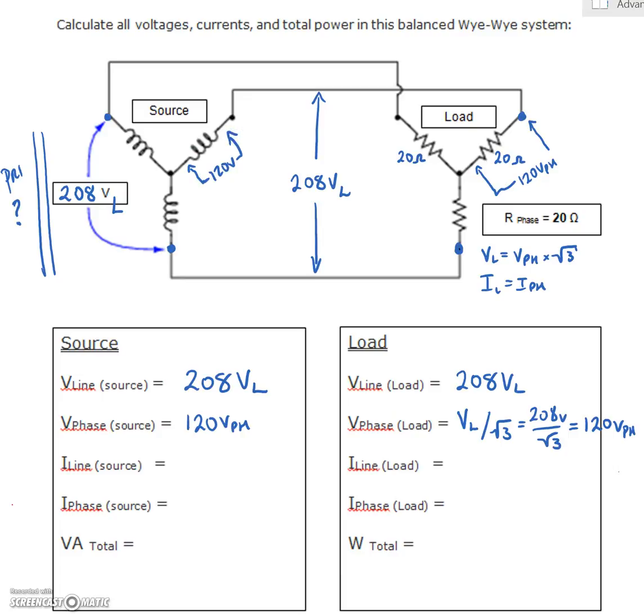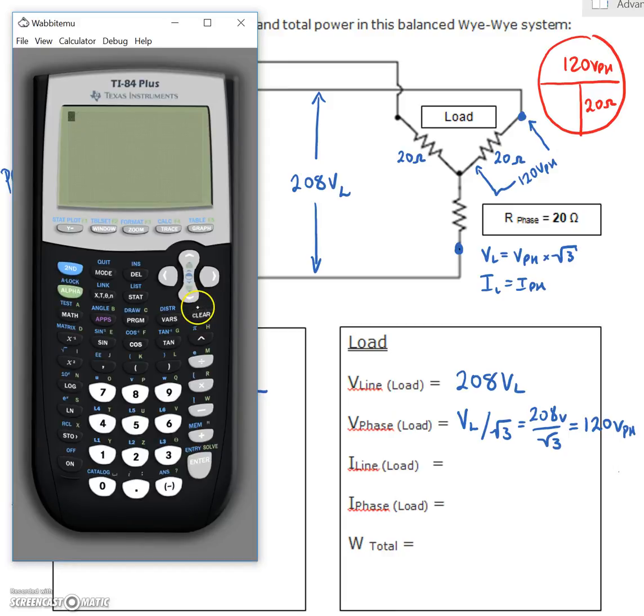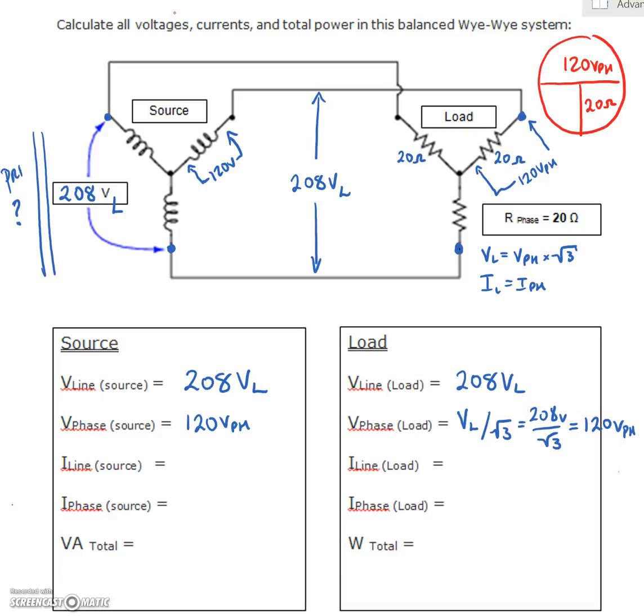Our next step is to find the phase current. So we're just going to break this down into an Ohm's Law calculation here. So on the phase here, we have 120 volts. That's impressed across 20 ohms. And obviously, I mean, we don't need a calculator for this, but we'll just do it anyways. 120 divided by our 20 gives us 6 amps on the phase. Beautiful.